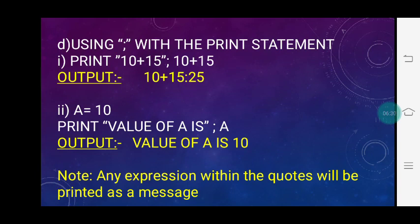Using semicolons with the print statement: print "10 + 15:"; 10 + 15 — this will print '10 + 15:' because it is written in double quotation marks, and then the addition of the two numbers, 10 + 15 = 25. The print statement uses a semicolon as the separator to print multiple expressions.